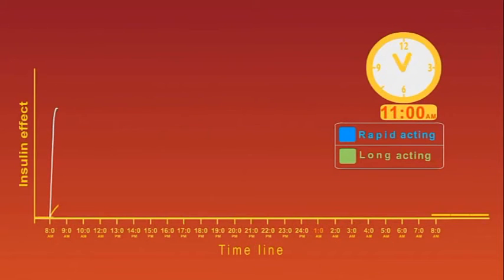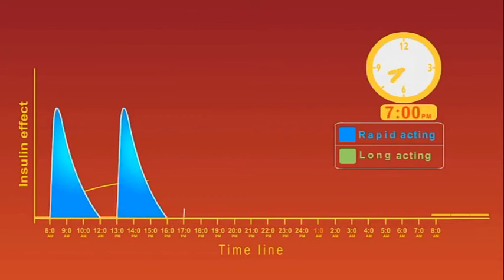One of the most intensive regimens consists of administering three injections of rapid-acting insulin immediately before each meal. In addition, a large dose of long-acting insulin such as detemir or glargine is injected in the morning to mimic the basal insulin background.